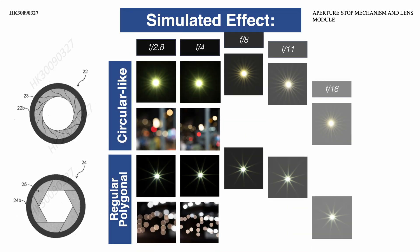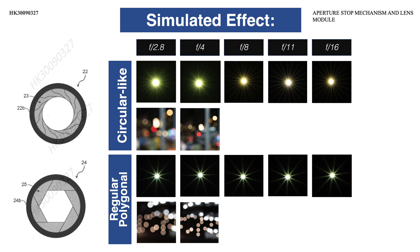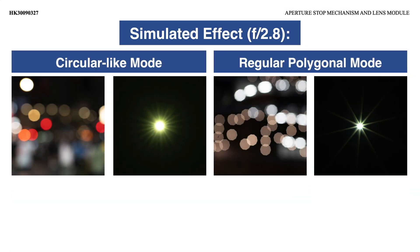This is a simulation of the bokeh and sun-star effects produced by this aperture mechanism. For example, at f2.8, we can see a circular-like aperture produces circular bokeh effects and irregular sun-star effects, while a regular polygonal aperture produces polygonal bokeh effects and regular sun-star effects. The bokeh effect is more ideal in circular-like mode, while the sun-star effect is more ideal in regular polygonal mode. This design allows users to choose between different bokeh and sun-star effects by selecting the desired shape of the light-passage opening. It combines the merits of both.